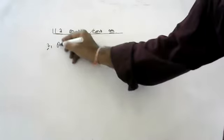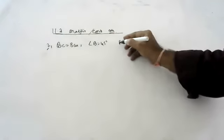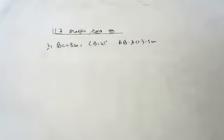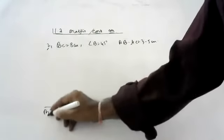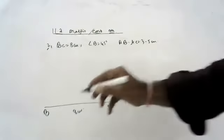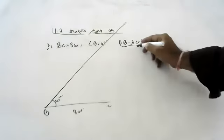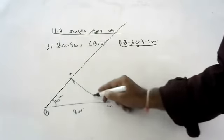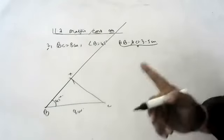Second question: VC is equal to 8.5 centimetres, angle V is equal to 45 degrees, AV minus AC is equal to 3.5 centimetres. VC is 8 centimetres and angle V is 45 degrees — you should draw. AV minus AC is 3.5 — you cut it. Wherever you are cutting, joint into the tip. For the joint line only, we should draw the perpendicular bisector.